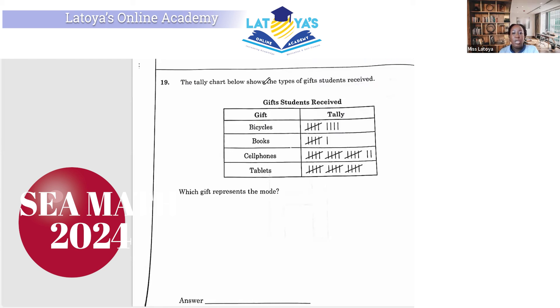Question 19 says, the tally chart below shows the types of gifts students received. Students received bicycles, e-books, cell phones, and tablets. So for bicycles, we have 5, 6, 7, 8, and 9. Books, you have 6. Cell phones, we have 5, 10, 15, 16, 17. For tablets, we have 5, 10, 15. So the question wants to know which gift represents the mode. The gift that represents the mode is cell phones. So you have to write cell phones as your answer.